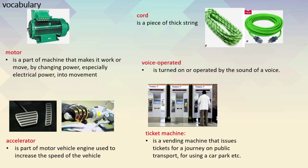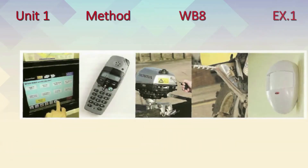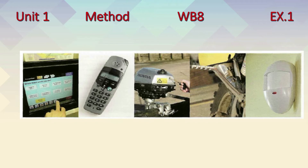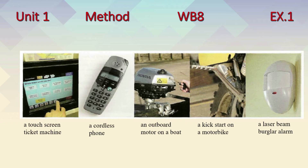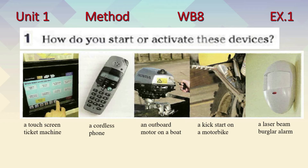Now open your coursebook to page 8. What are these devices? The first one is a touch screen ticket machine. This one is a cordless phone. This one is an outboard motor on a boat. And this is a kickstart on a motorbike. The last one is a laser beam burglar alarm. The question is: how do you start or activate these devices? Think about how these devices are activated or started, then write full sentences to explain.